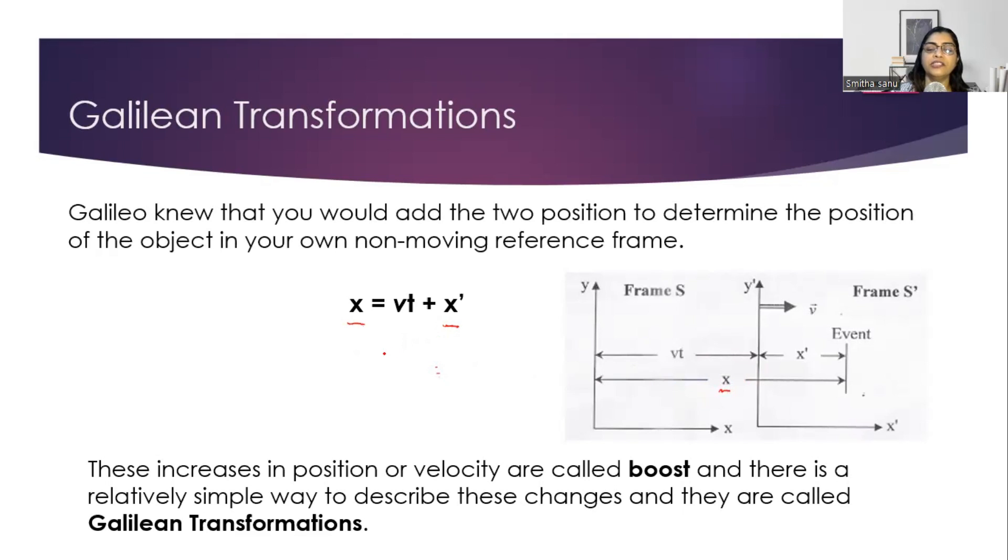And when we add these things, it is called as the boost. Now if I divide the equation throughout by t, that is displacement over time, gives me the next concept, which is velocity. So can I write x over t as velocity u, next term is v, and the next after that is u' because x' over t is the other velocity. So can you see that we have come up with the velocity addition theorem, using the concept of Galilean transformations.